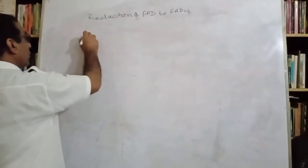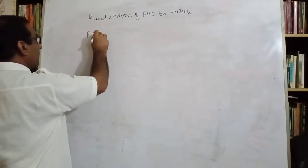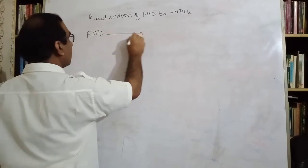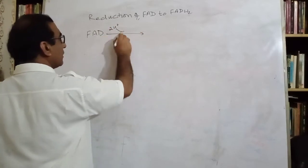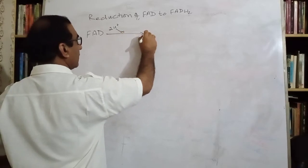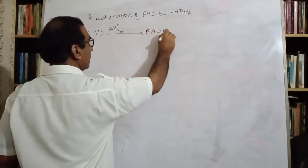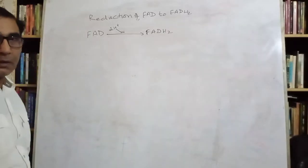In other words, FAD plus two hydrogens and it becomes FADH2.